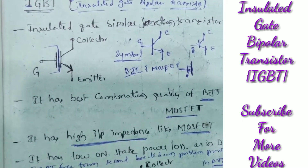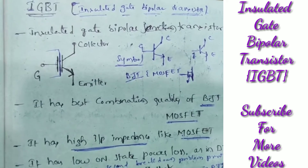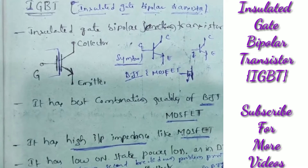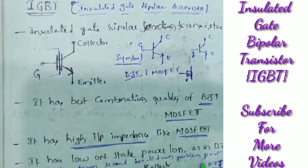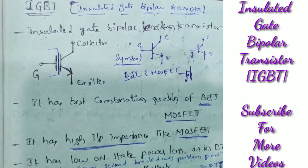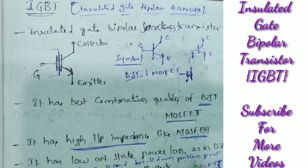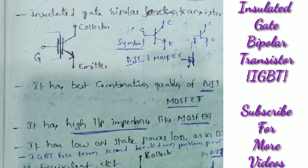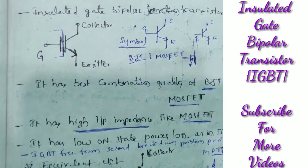There is also a disadvantage in the BJT — that is the second breakdown problem. The IGBT is free from the second breakdown problem present in the BJT. That is one more advantage added to the IGBT.